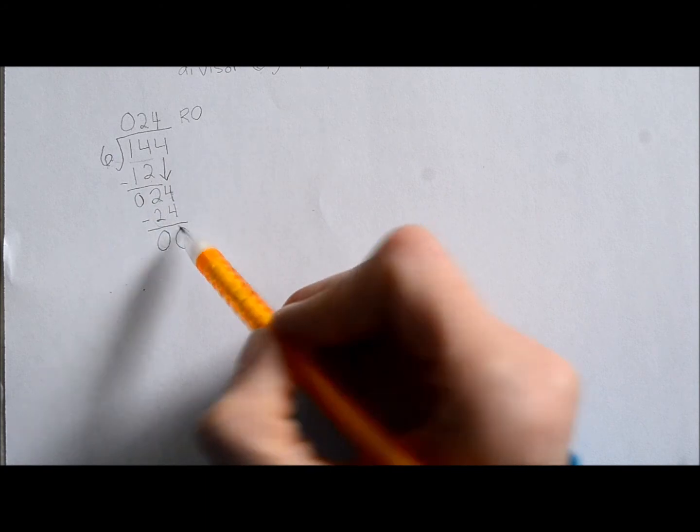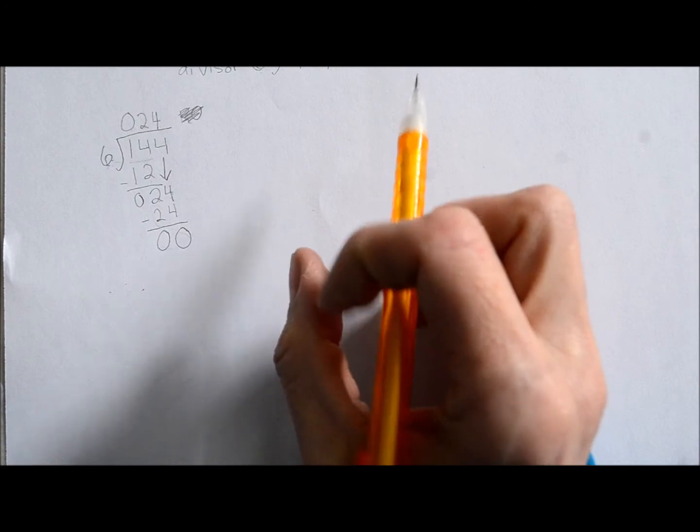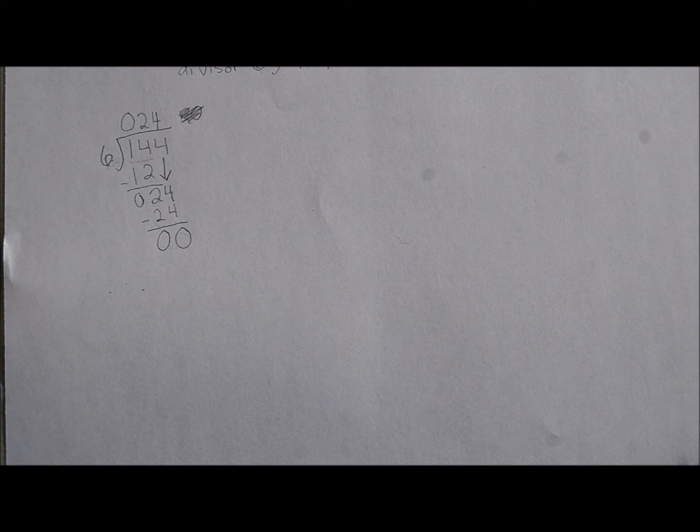But this one has a remainder of zero. And when that's the case, you don't even need to put that in. You just leave it. All right. And that's how we do long division. I hope this was as exciting for you as it was for me. We're going to go ahead and use this to do our math homework for tonight now. Goodbye, children.